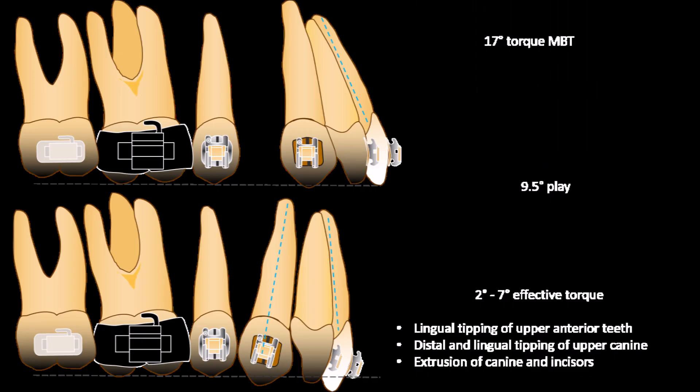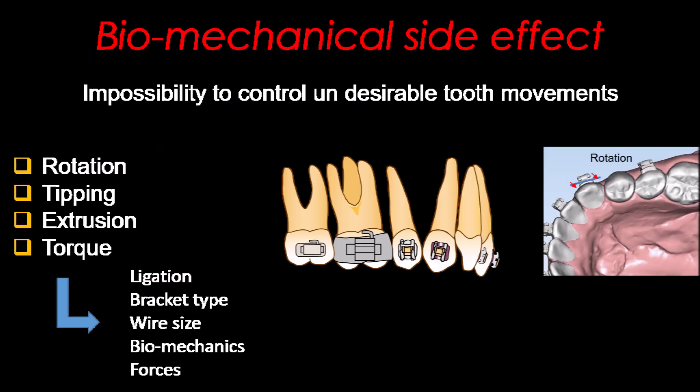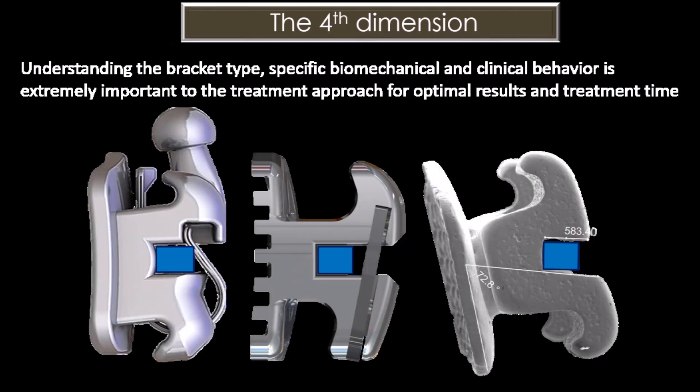Adding all together, we can see the effect on clinical results. Looking at a two upper first premolar extraction case, the expected side effects can include variating loss of torque, lingual tipping of the upper anterior incisors, distal and lingual tipping of the upper canines, and extrusion of canines and incisors. The extent of the side effects has a direct relationship with other parameters such as ligation, bracket type, wire size, biomechanics and exercise forces. And there is the fourth dimension.